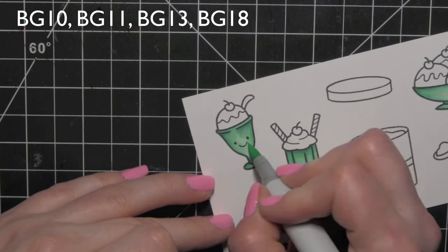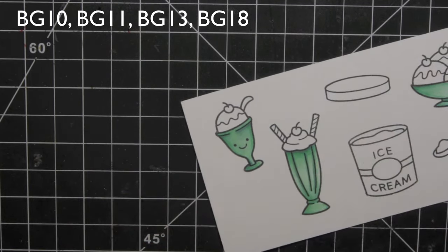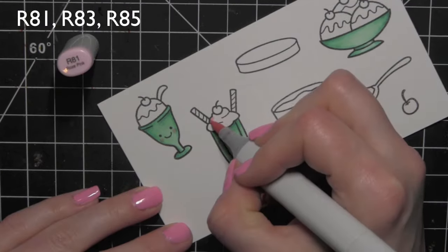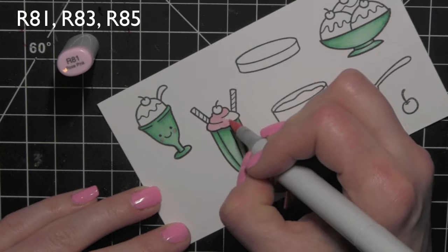I originally thought I might try to do them in different colors and I thought it kind of took away from the overall theme. I drew in some little pink cheeks for the one dish with some R20.